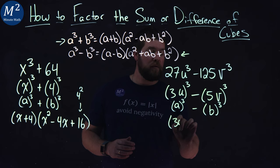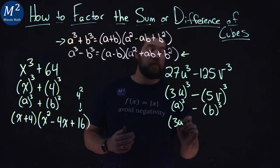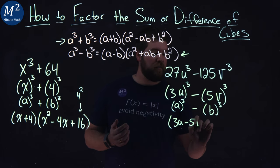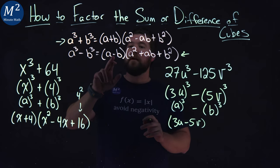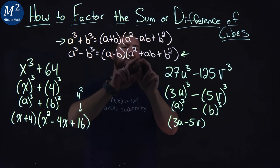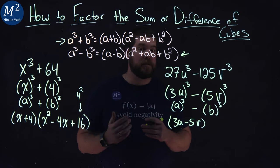Our a value is a 3u. And our b value is a 5v. So we minus a 5v. Notice again the subtraction kind of lines up to the first part. But then it switches to addition here. Just so you know for memorization purposes.